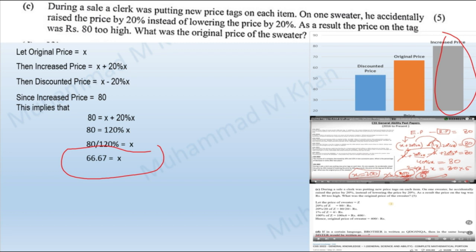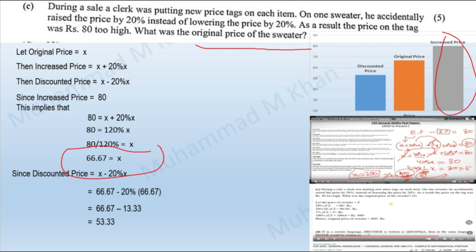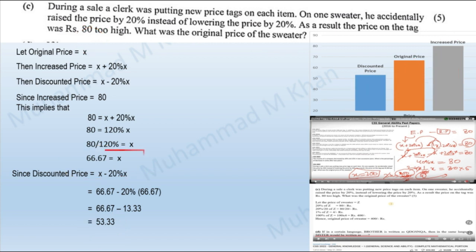We were required to calculate the original price of the sweater. To make the concept clearer, let's also calculate the discounted price that was supposed to be put on the sweater. If the original price is 66.67, then deducting 20% gives us 53.33. So: original price = 66.67, discounted price = 53.33, and the increased price erroneously placed on the tag = 80, as given in the question. This confirms our answer — the original price was 66.67.